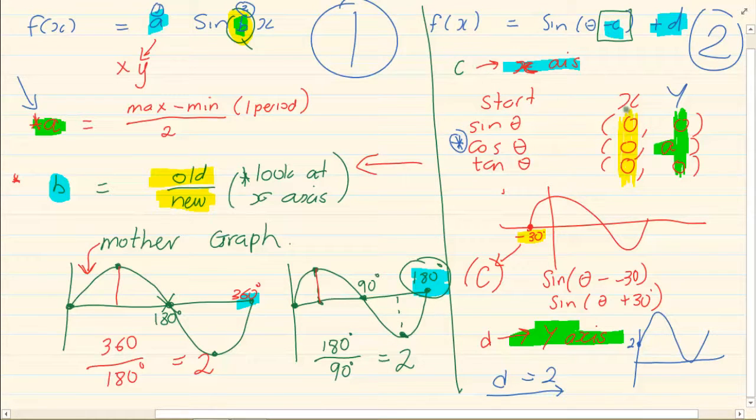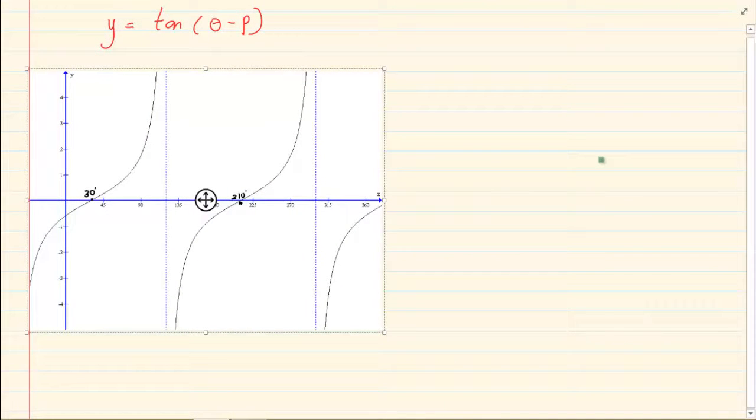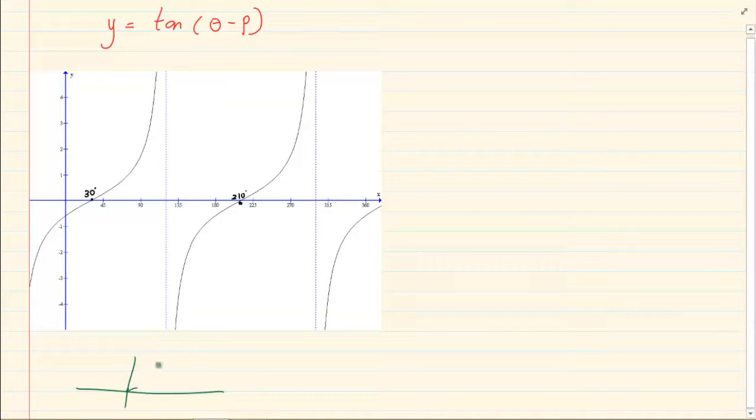Now if we are looking at C, we are looking at the X axis. Now the X axis says tan should be 0 degrees. So it says that tan should have started on 0 degrees. Had we had the graph, it would have started on 0 and it would have went up.